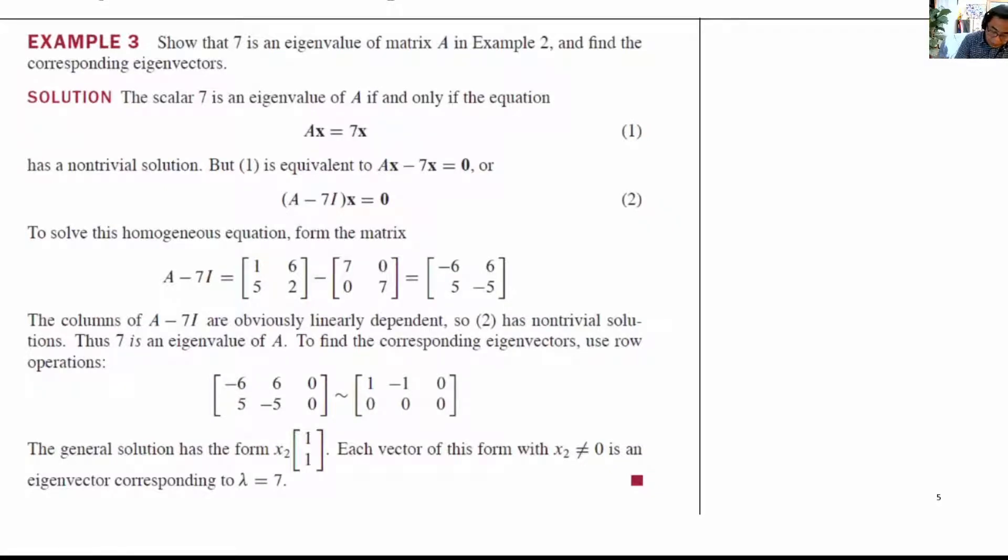We will now examine the problem of finding the eigenvalue and eigenvector of a matrix. So if we are given matrix A, and this matrix is from example 2, the matrix is 1, 5 for the first column, and 6, 2 for the second column. It is a 2 by 2 matrix.